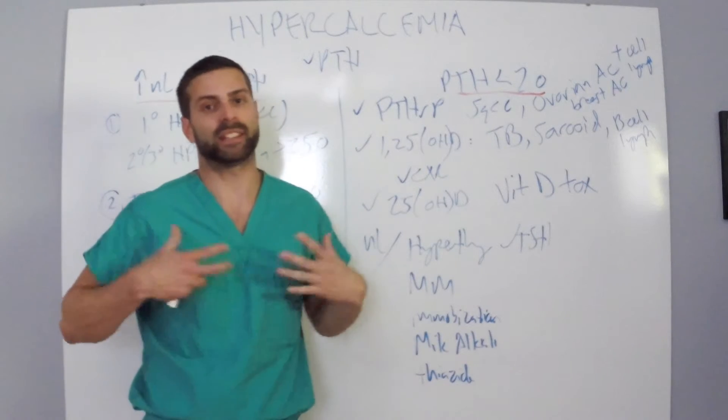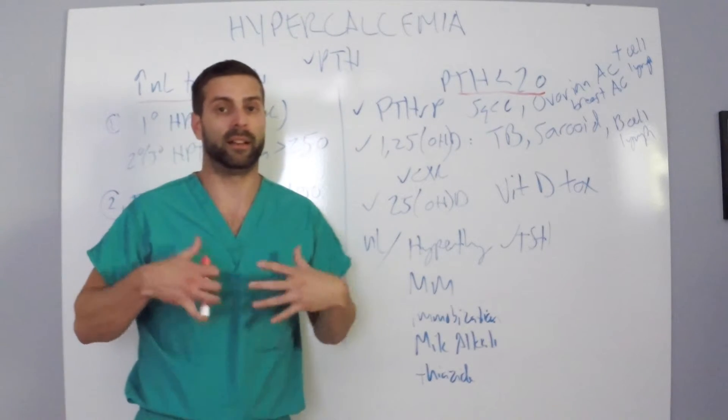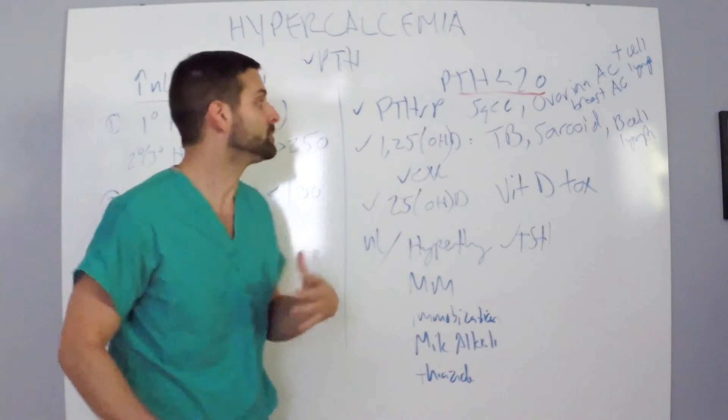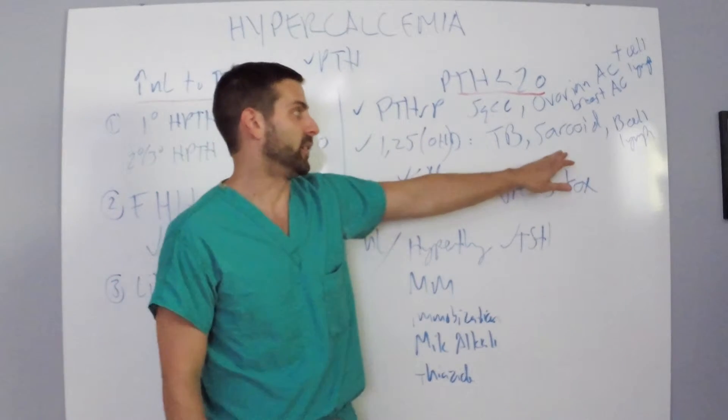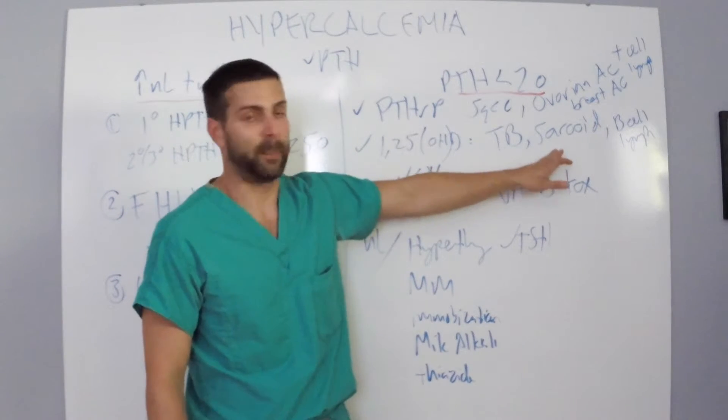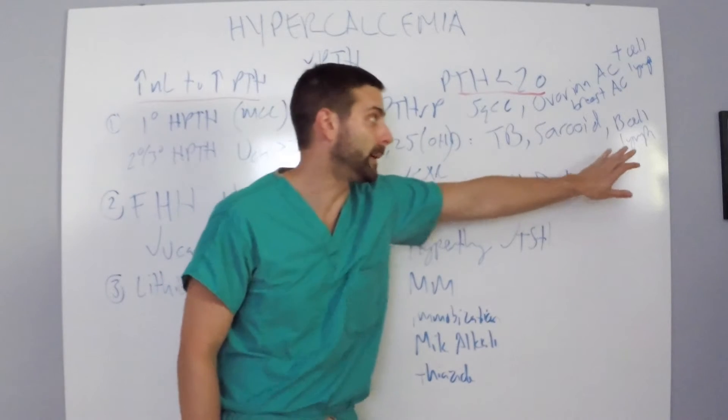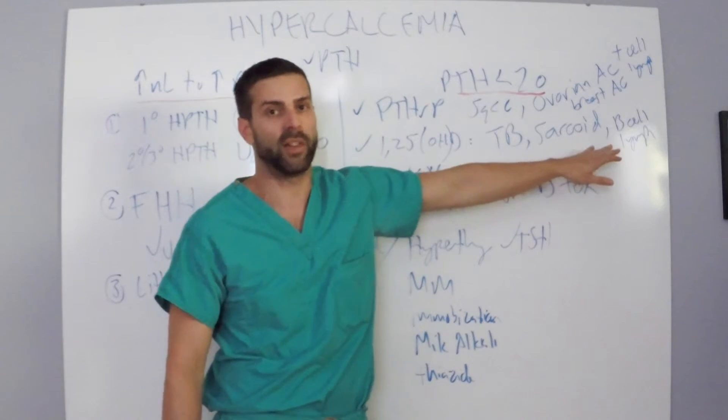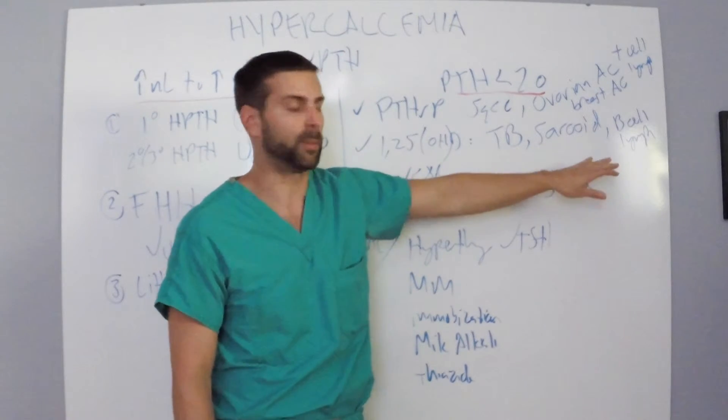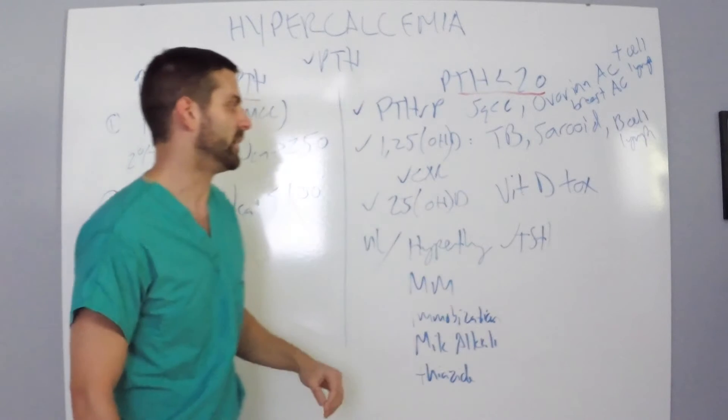In patients who have sarcoid, they're going to show you a chest x-ray with bilateral hilar adenopathy and tell you that the patient is African American. In patients with a B cell lymphoma, they're going to give you all the B symptoms as well as some weight loss so you'll be able to go down that route.